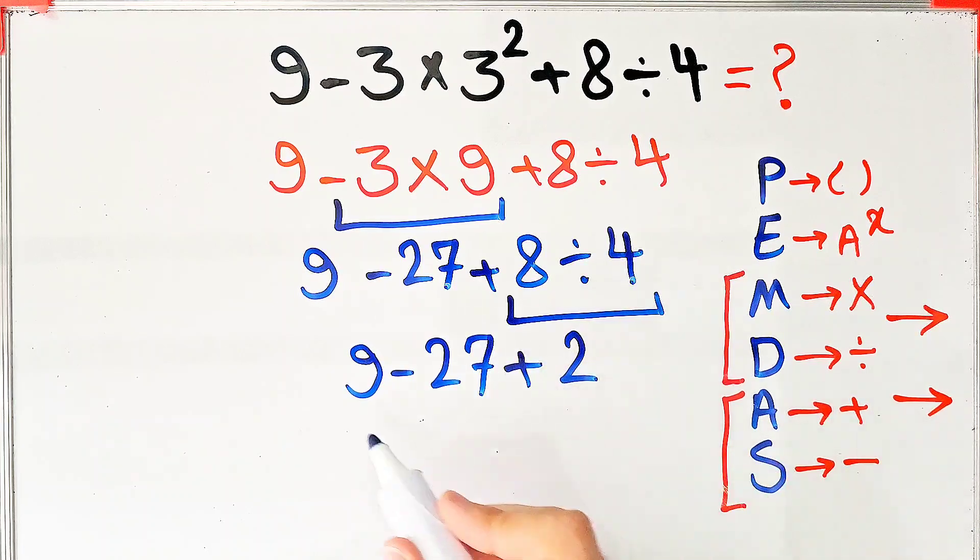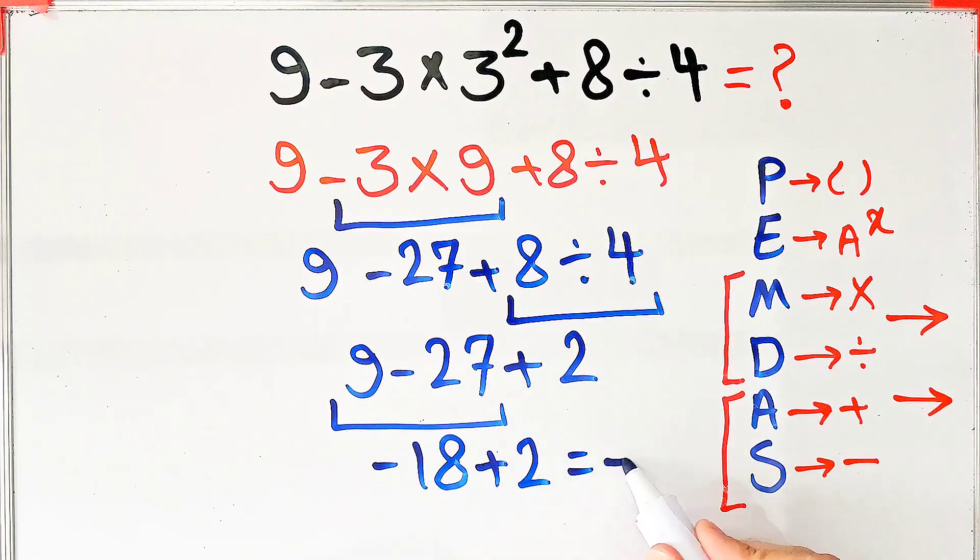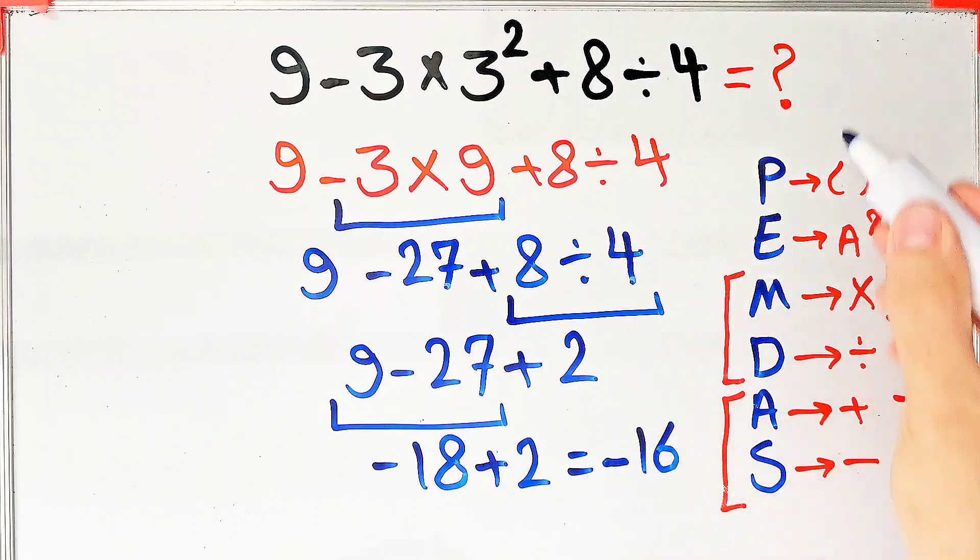9 minus 27 equals negative 18. And negative 18 plus 2 equals negative 16. The final answer of this question equals negative 16.